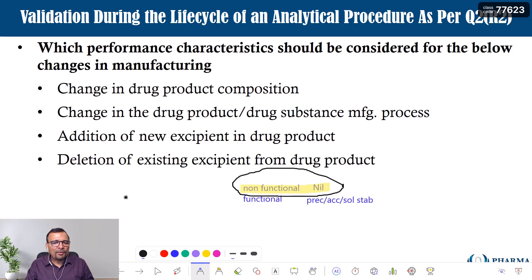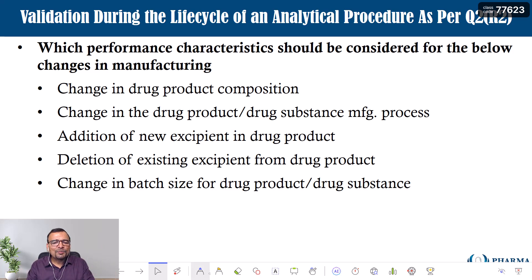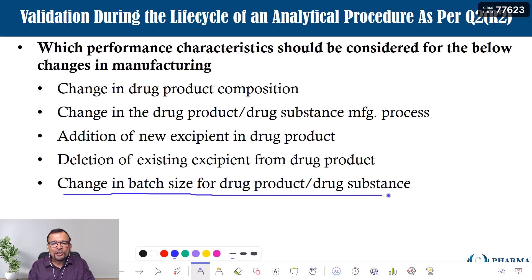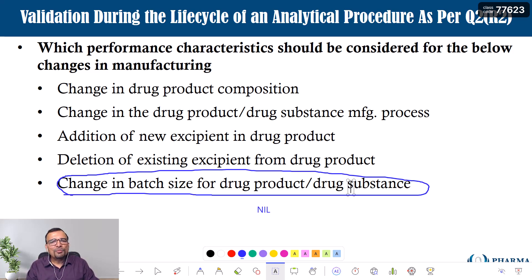The fifth point is change in batch size for drug product or drug substance. You are changing the manufacturing scale but not changing any product composition. In that case, this particular change — change in batch size — may not require conducting any validation. There is no need to conduct partial validation; you can wave it off as there is no impact on the performance characteristics of your testing procedure.